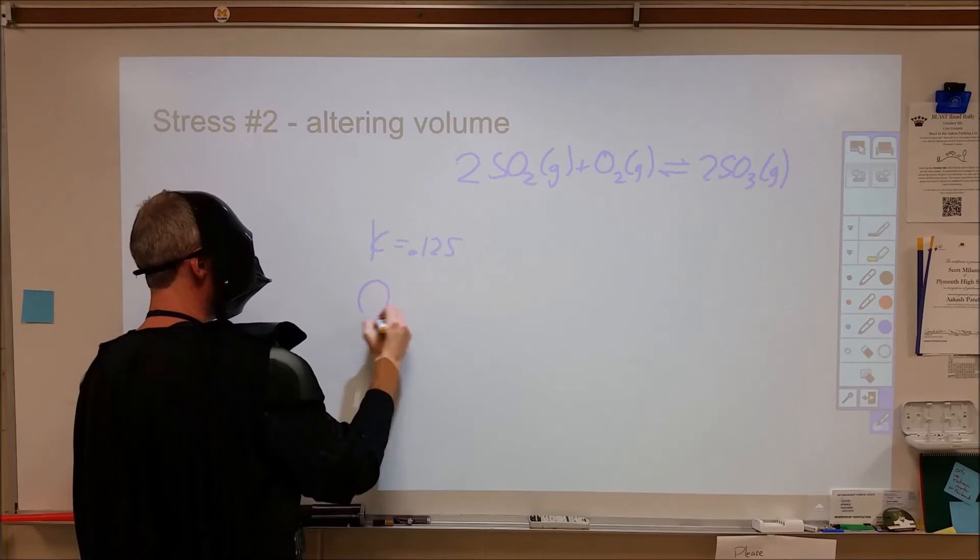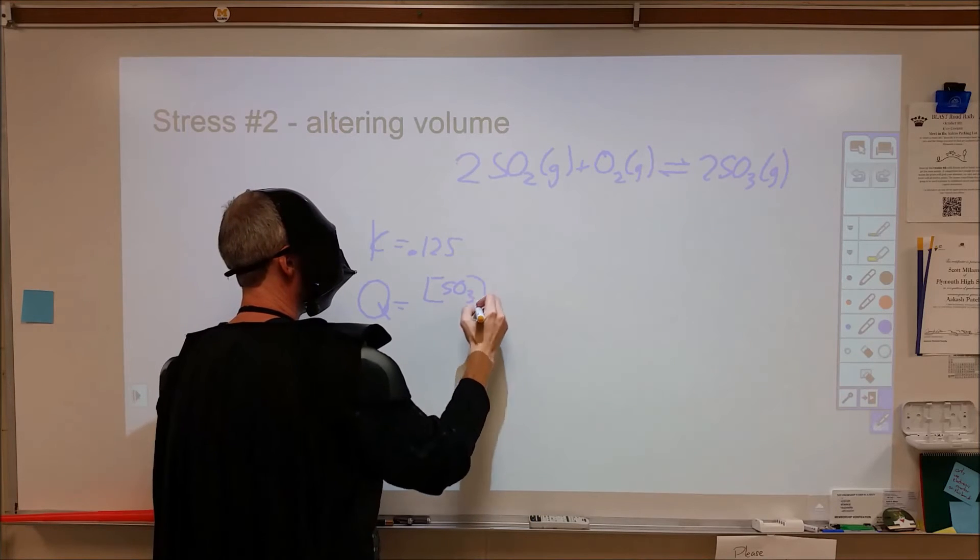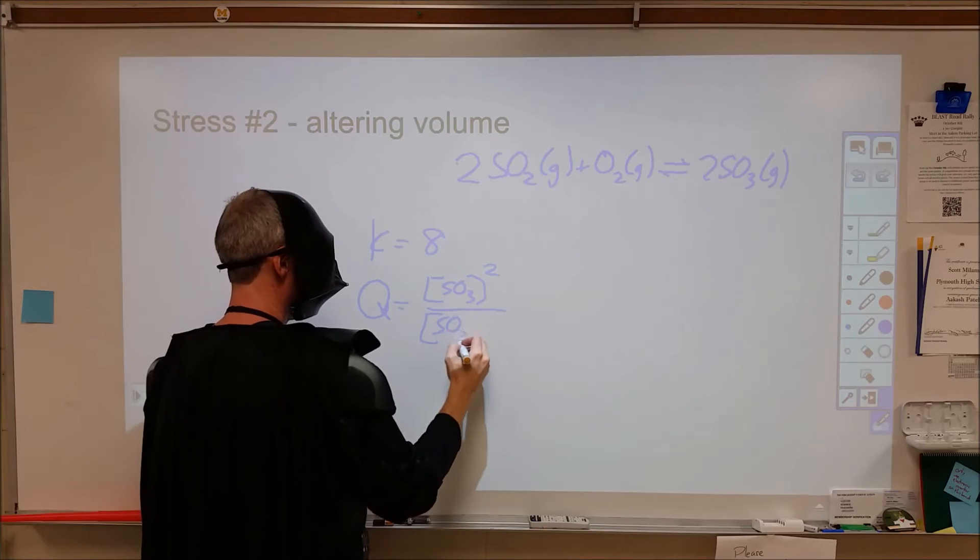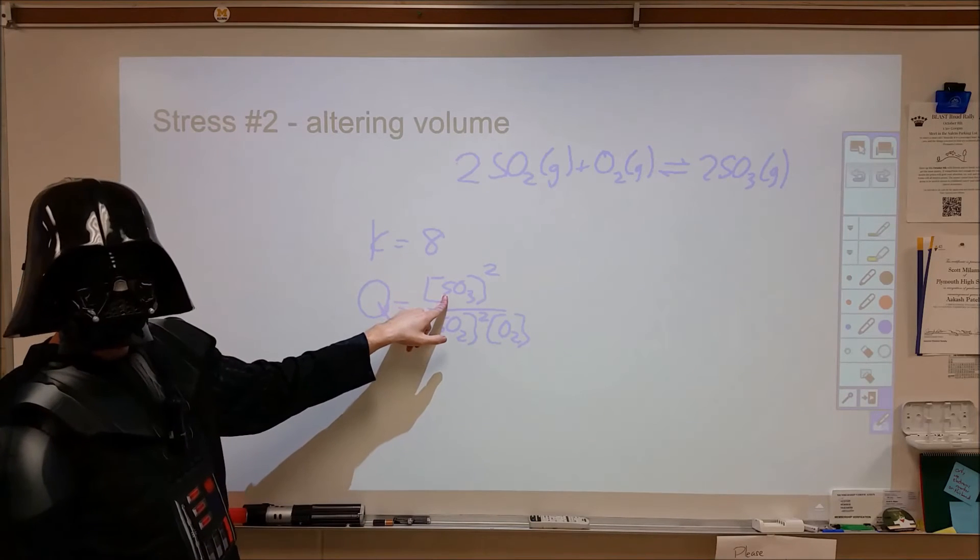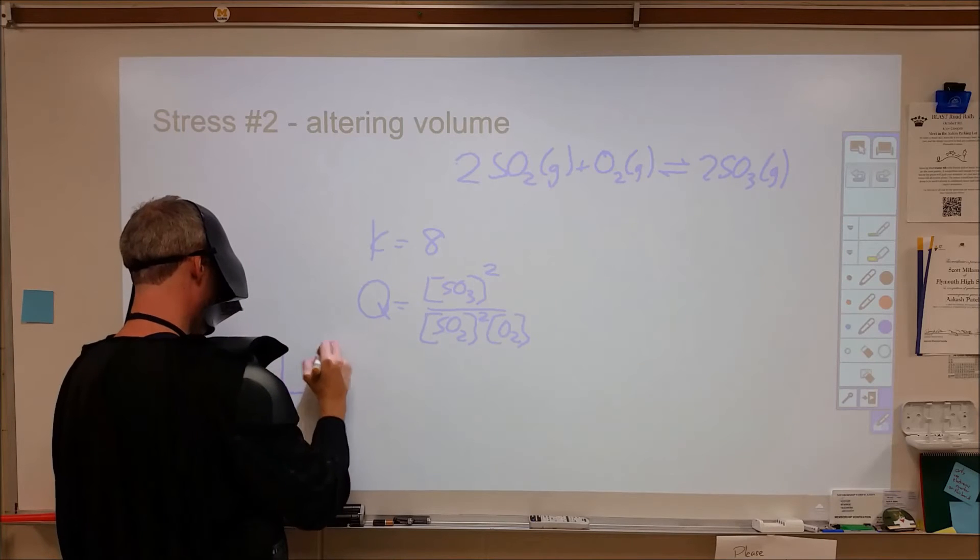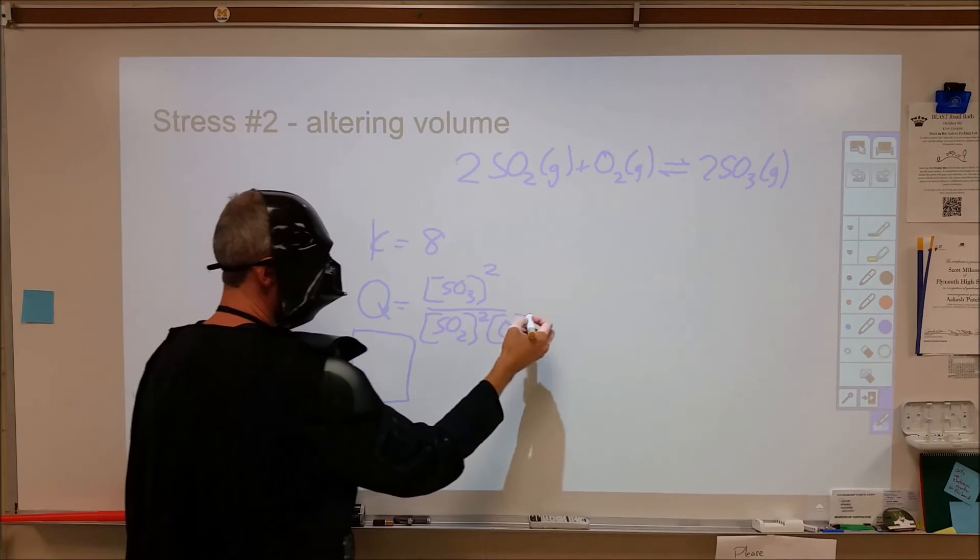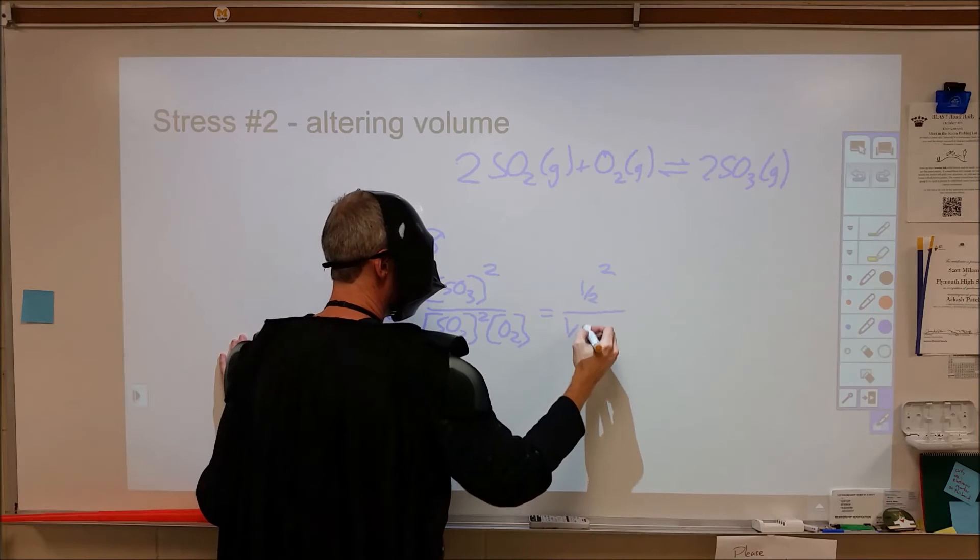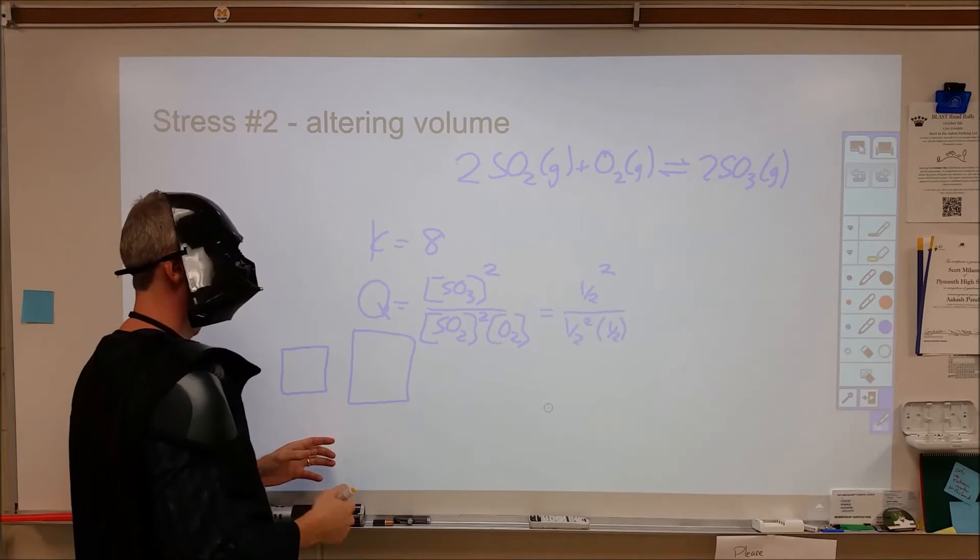When we change the volume, Q is going to change. The equilibrium constant will not, but Q will change. Our Q is equivalent to SO3 squared over SO2 squared times O2. If we were to change the volume, that's going to change the concentration of the gas. Let's say that we change the concentration where we go from a volume of this to a volume that's twice as big, double the volume. That's going to make each of these go down by a factor of a half. It's going to affect a half squared in the numerator, a half squared in the denominator, times another half in the denominator. My Q then changes by a net of a factor of one half and the reciprocal of that, so it doubled. I'm going to have to reestablish equilibrium.